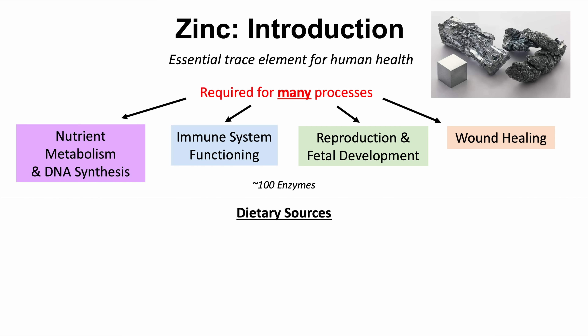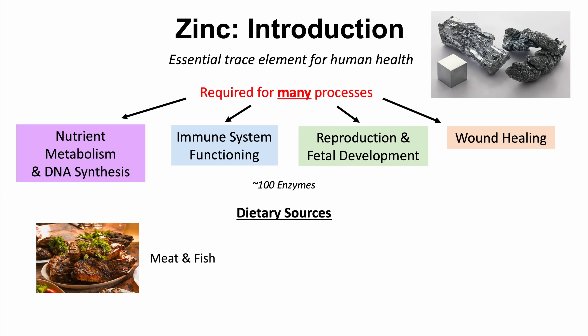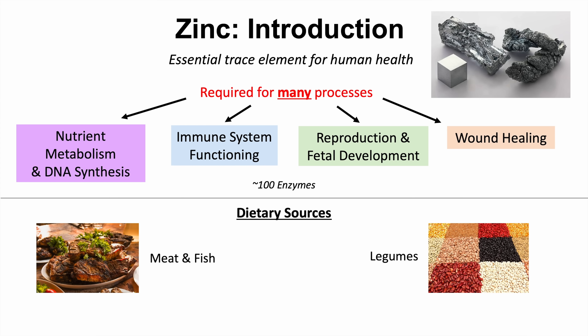We actually have to get zinc from our diet. Dietary sources include meat, fish, and legumes. The recommended daily allowance is 8 to 11 milligrams per day for adults — 8 for females and 11 for males.